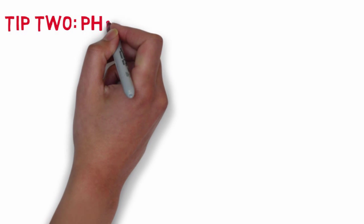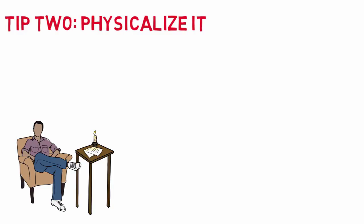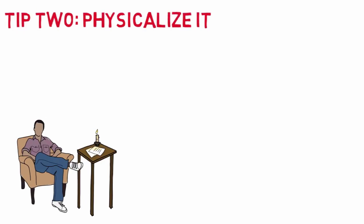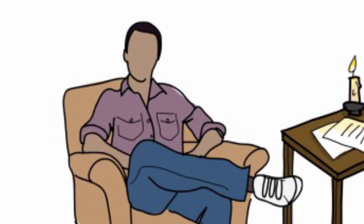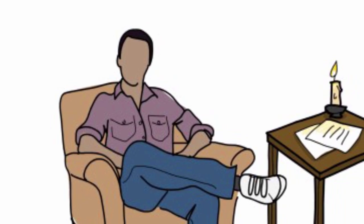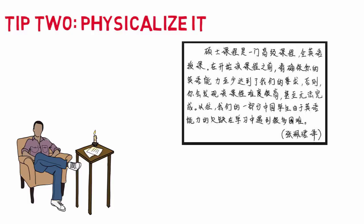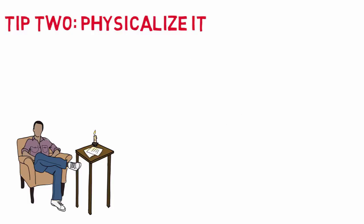Tip number two: physicalize it. If the scene were dubbed into a foreign language, how would the audience see the relationship? This is important for getting your choices out of your head and into the frame or stage. What can you do to truthfully reveal the relationship? How can you show the relationship so that it's unmistakable, even if it were dubbed in Mandarin? Even a detailed backstory is useless if it remains in your head.